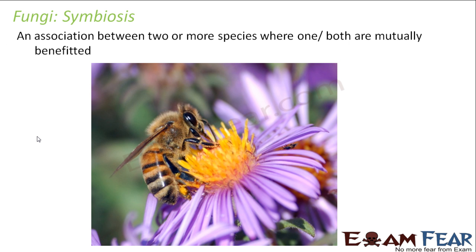Symbiosis is an association between two or more species where one or both are mutually benefited. Looking at the example on screen where a honeybee sits on a flower: the honeybee gets nectar from the flower, and at the same time helps in pollination. So both the flower and the honeybee are benefited from each other.